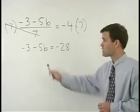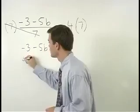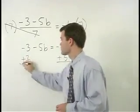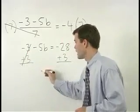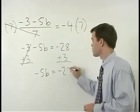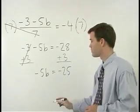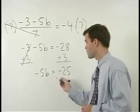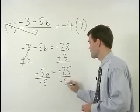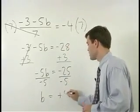Our next step is to isolate the B term by adding 3 to both sides. We get negative 5B equals negative 25. Don't forget to bring down the negative. To get B by itself, divide both sides by negative 5, and B equals positive 5.